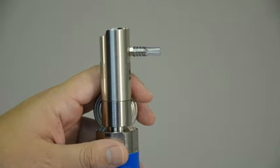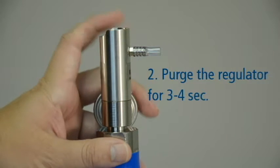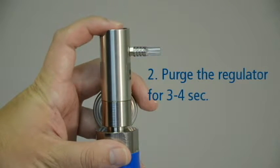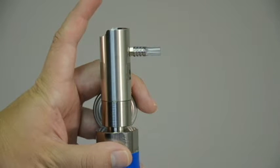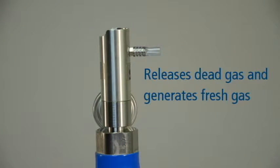Before performing the accuracy check, it is important to purge the regulator. This is done by pressing and holding the button or valve on the regulator for 3 to 4 seconds. Purging the regulator releases any dead gas that may be present in the regulator and generates fresh gas for the purpose of your accuracy check.